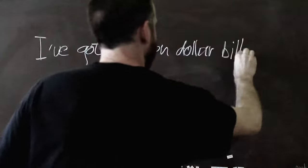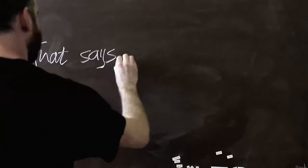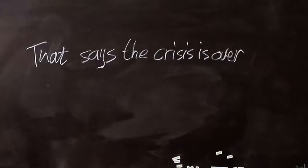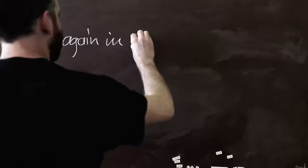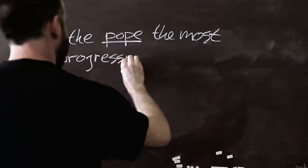I've got a billion dollar bill that says the crisis is over. Green is the new black. Tiny kind and what kind of world is the wolf the more progressive leader?